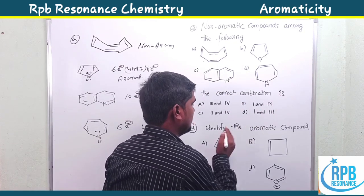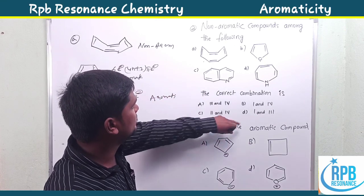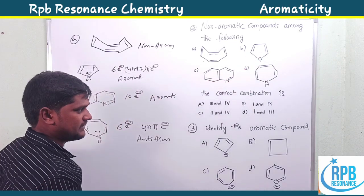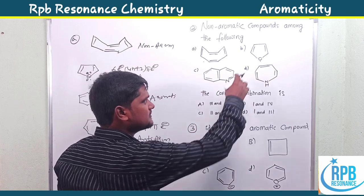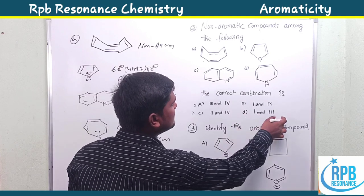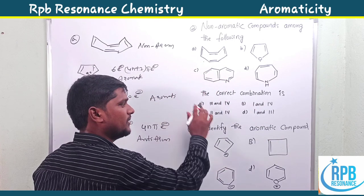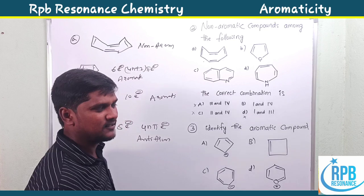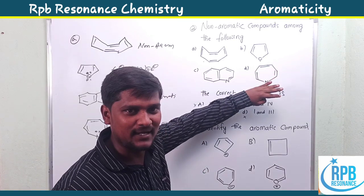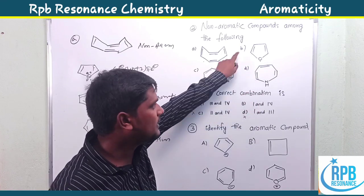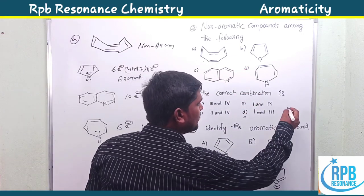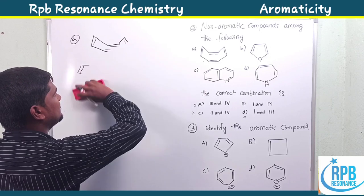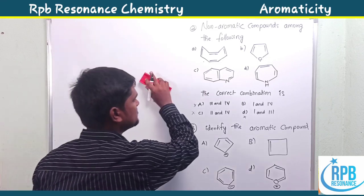Checking the options: option C says two and four — but furan (two) is aromatic, so it is wrong. Option D says one and three — but three is aromatic, so it is wrong. By elimination, one and four is correct: one is non-aromatic and four is anti-aromatic. However, strictly only one is the purely non-aromatic option. This type of small discrepancy is generally observed in JEE exam questions.